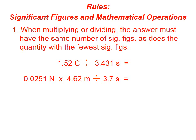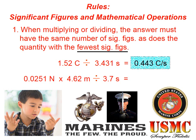When multiplying or dividing, the answer must have the same number of sig figs as does the quantity with the fewest sig figs. Here are a couple of examples. When you're multiplying or dividing, you need to count up the significant figures on each of your quantities. Here we have three significant figures, here we have four. The rule says our answer should have the same number of sig figs as the quantity with the fewest. This one has three, this one has four. Three is less than four, so we type this into our calculator and round it to three significant figures.